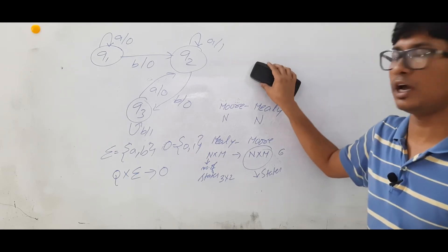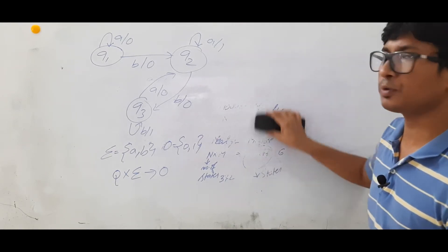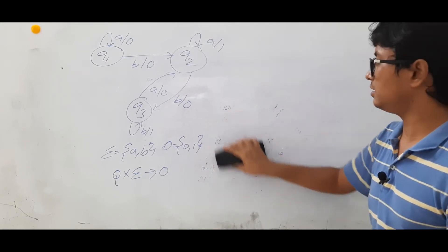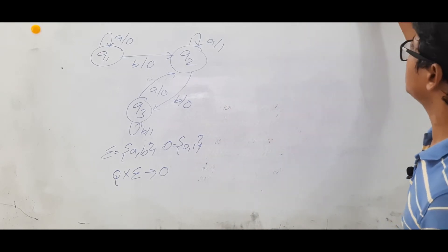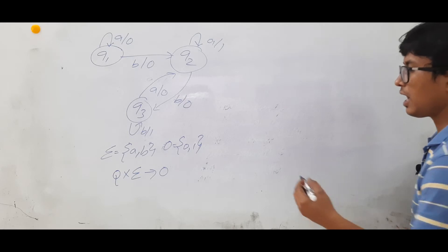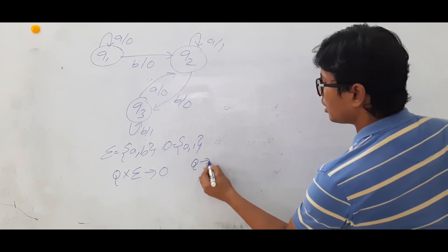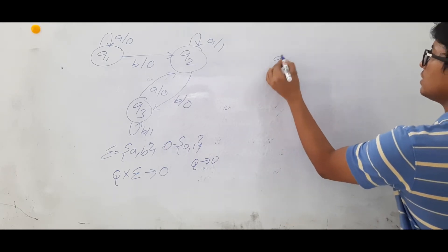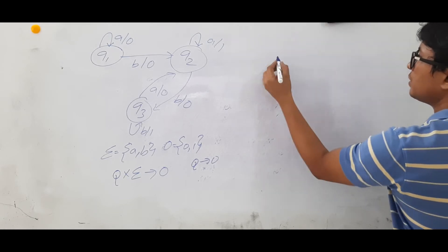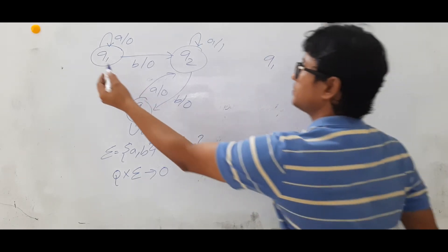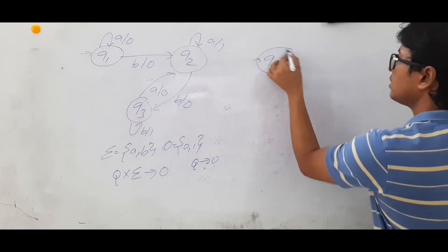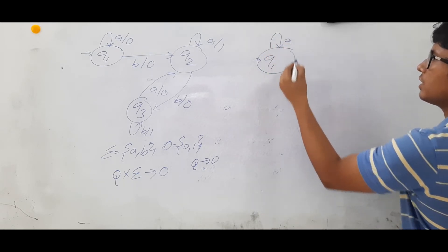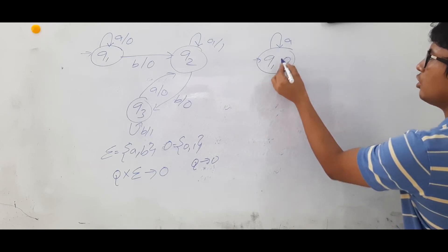With this introduction, let's discuss the conversion process. Just remember: the number of states may increase. The Moore machine has the output function where for each state you will have an output. Q1 is the initial state. From Q1 on A, where are you going? You are going to Q1 and you are getting the output as 0.